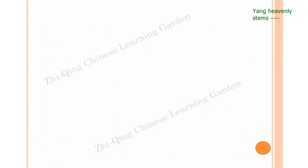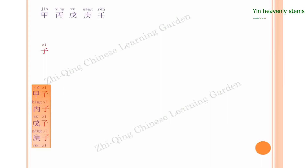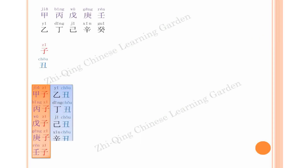Yang heavenly stems jia, bing, wu, geng, ren — starting with the first jia, combining with yang earthly branches. Zi gives us the first column: jia zi, bing zi, wu zi, geng zi, ren zi. And yin heavenly stems yi, ding, ji, xin, gui — starting with the first yi, combining with yin earthly branch chou — we get the second column: yi chou, ding chou, ji chou, xin chou, gui chou.